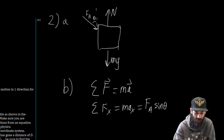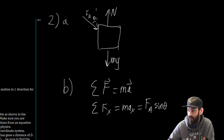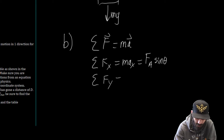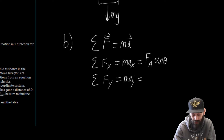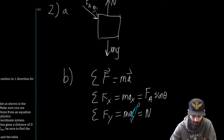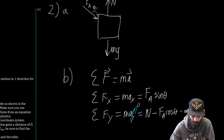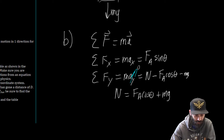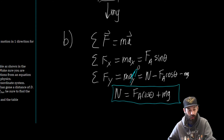The sum of the forces in the y direction is going to be equal to MA_y. Because the acceleration in the y direction is zero, this is going to be zero, which equals N minus F_A times cosine of theta minus Mg. So ultimately the normal force is going to be equal to F_A times cosine of theta plus Mg. That's something we're going to use later, and this is why even if you're not applying kinematics, it's always helpful to start with Newton's second law.